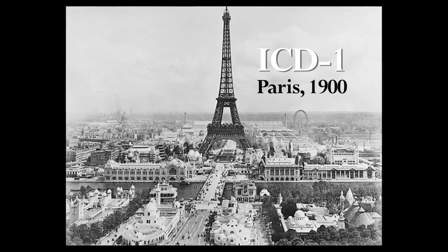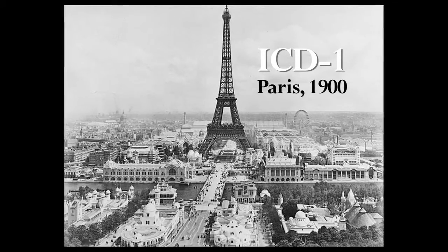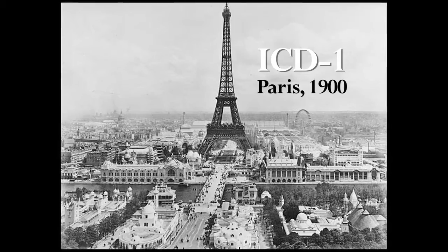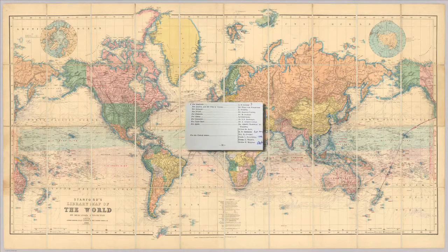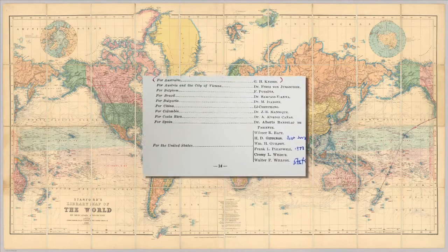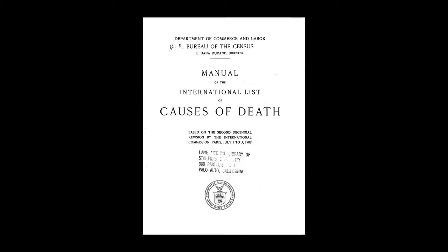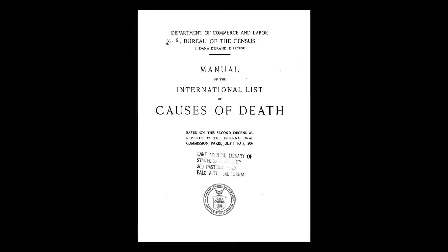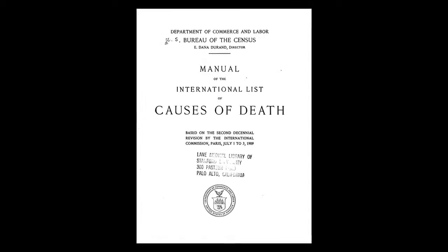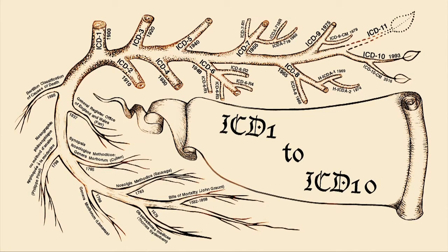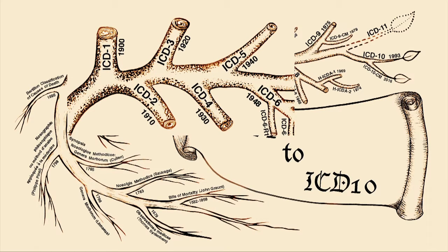ICD-1 was developed as a result of a meeting in Paris in 1900 attended by delegates from over 25 countries from throughout the world. They issued a document which would subsequently be called the First International Classification of Causes of Death. The delegates agreed to update the classification every 10 years to accommodate changes in diseases.